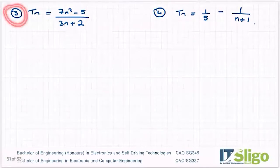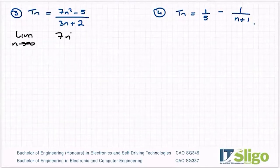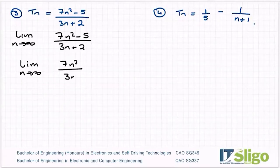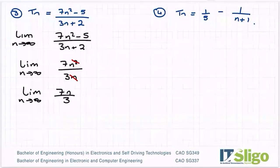Let's have a look at the third question. So again, let's evaluate the limit as n tends to infinity of 7n squared minus 5 over 3n plus 2. So again, the minus 5 and the plus 2 are not going to have much of an impact. So let's get rid of them. Let's cancel one of the n's. So now we're looking at the limit as n tends to infinity of 7n over 3.